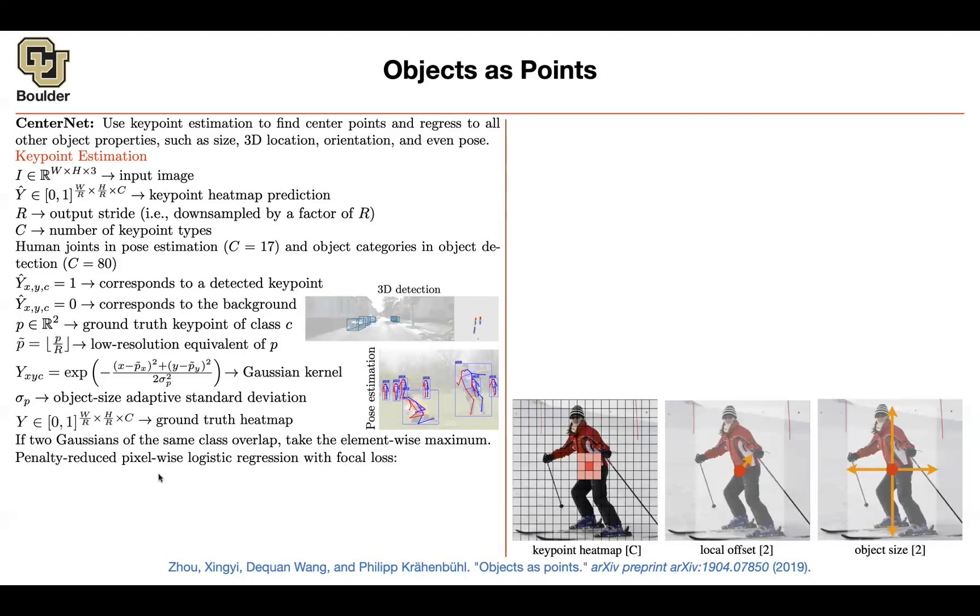And we did that before also, when we were doing pose estimation. So nothing new yet. The loss function is also not new. It's the same adjustment to focal loss that we saw when we were doing corners, when we were detecting corners. It's the same thing here. So no changes.